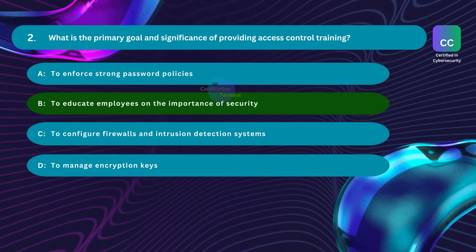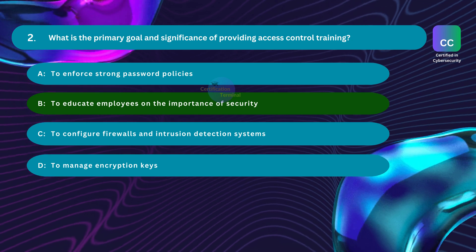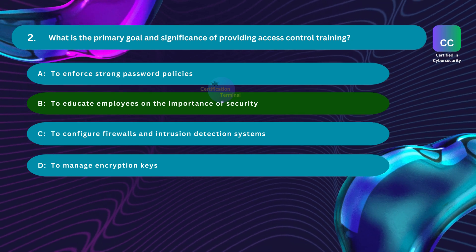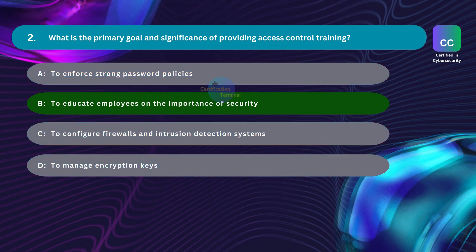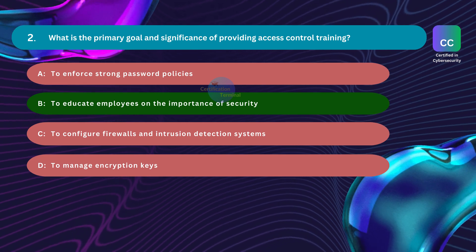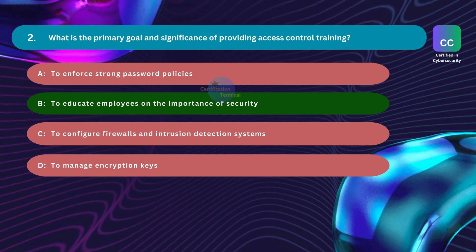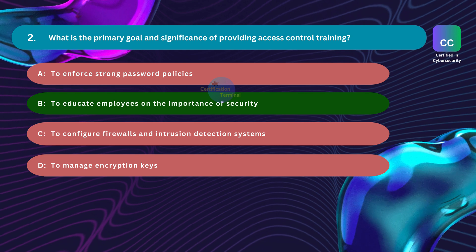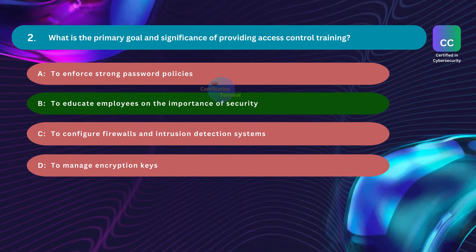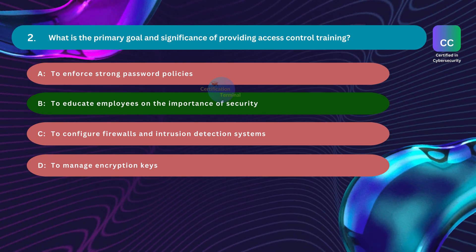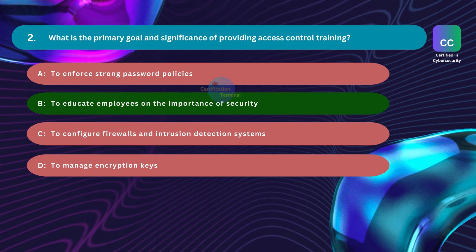This includes understanding the importance of access controls, such as user authentication and authorization, to prevent unauthorized access. While enforcing strong password policies, configuring firewalls, and managing encryption keys are important aspects of overall security, they may be part of broader security training rather than specific to access control training.